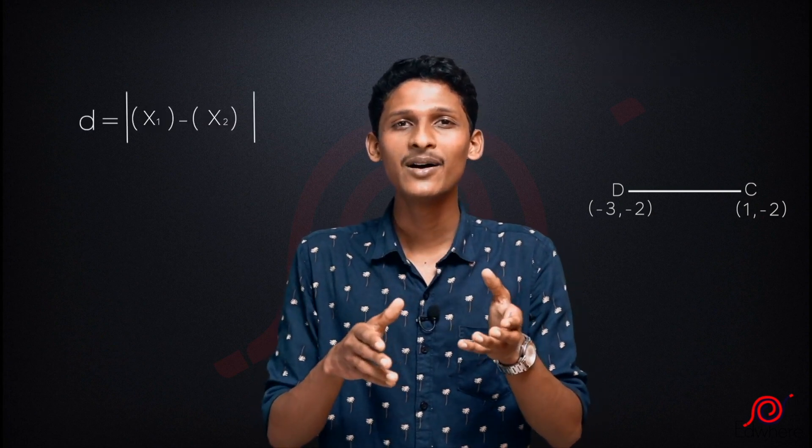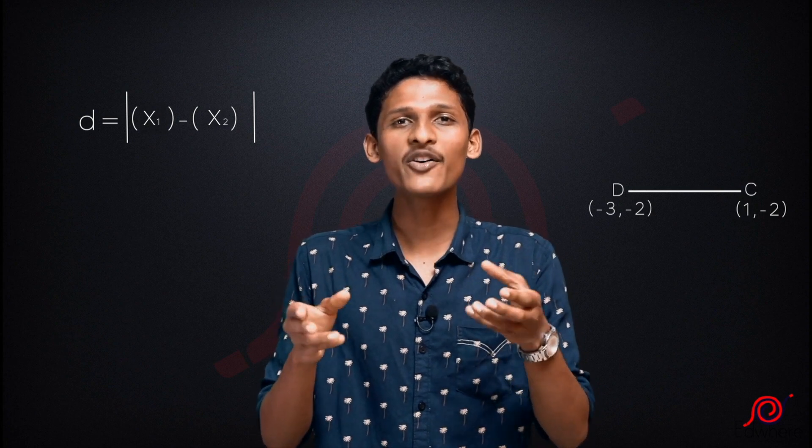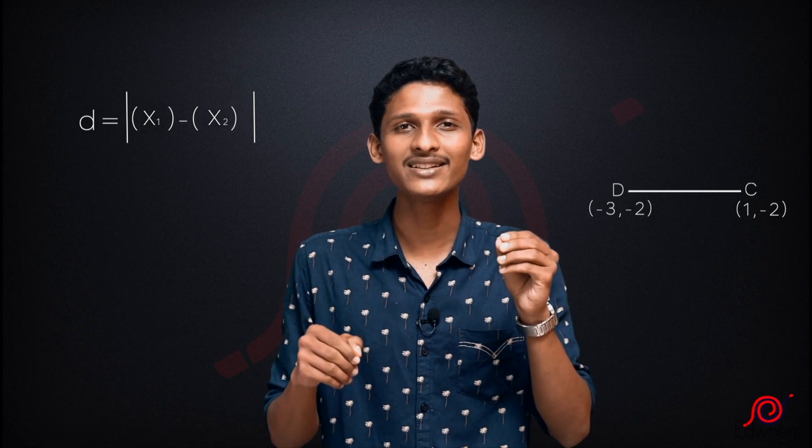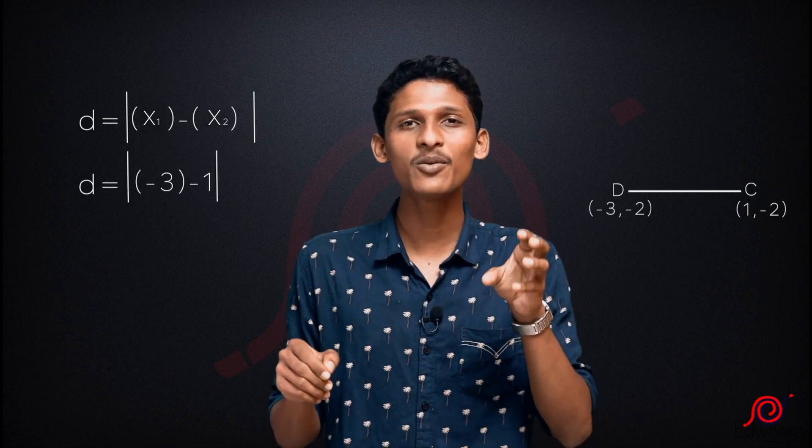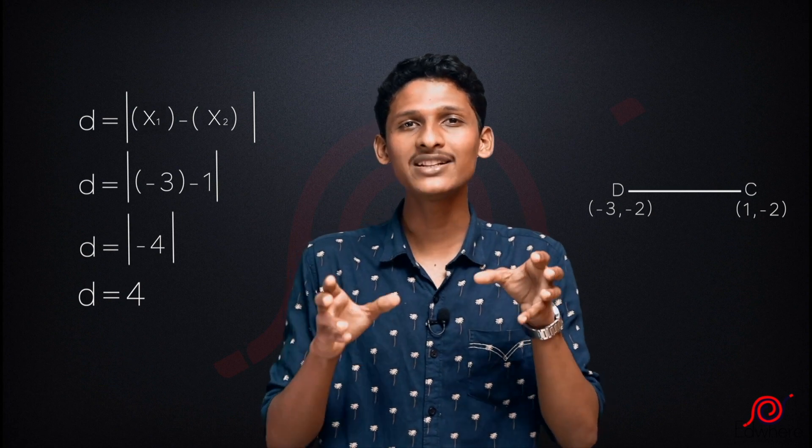We have the distance of BC as root 5. Now we have the length of CD. C is (1, -2) and D is (-3, -2). These two points have the same y-coordinates, so the distance formula is modulus of x1 minus x2. The distance equals mod of 1 minus (-3), which is mod of 4, so CD distance is 4.